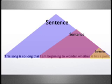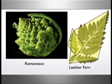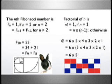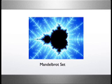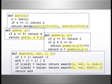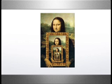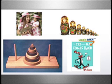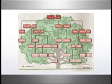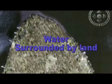Recursion shows up in human languages, plant shapes, simple and complex mathematics, divide and conquer algorithms, and many other places. Why, it's even in your family tree. As long as there's a termination condition, the circularity isn't a problem.